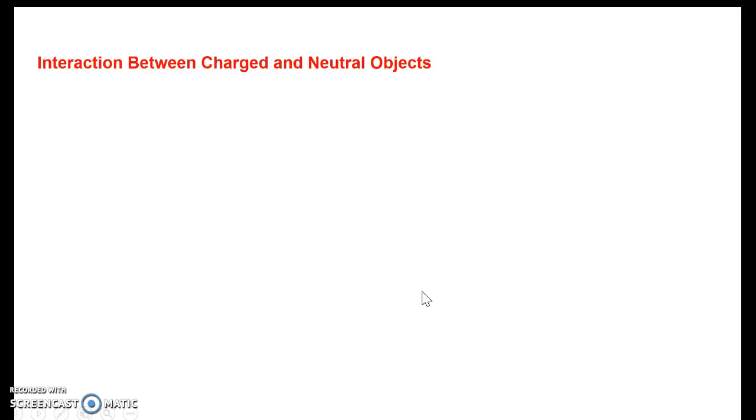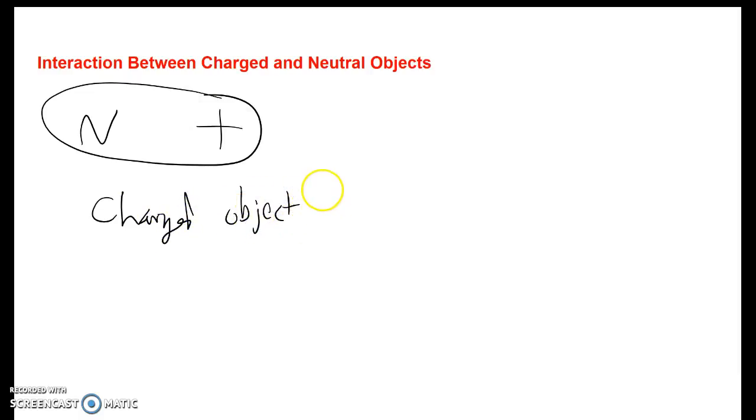Now let's talk about neutral objects because not everything's going to have a charge. So if something's charged, positive charge, let's say, and it's with a neutral, there will be an attractive force. So any charged object will attract a neutral object. And we'll talk about why that is. It's polarization. That's something we'll get to later. Just understand, a charged object and a neutral object causes attraction to occur.